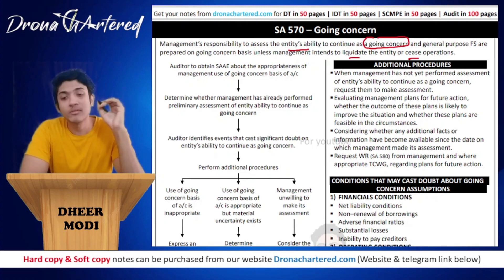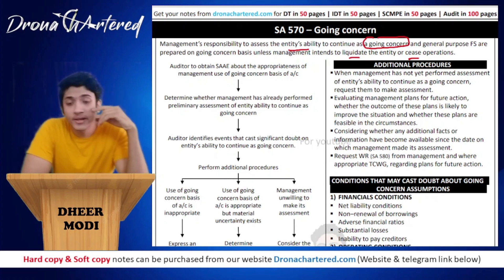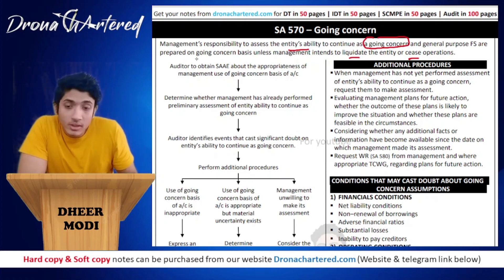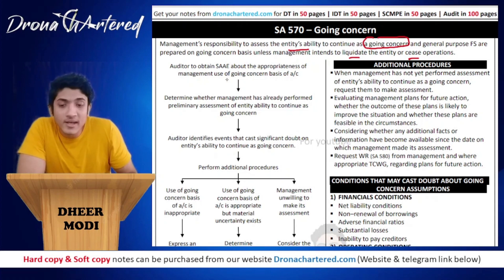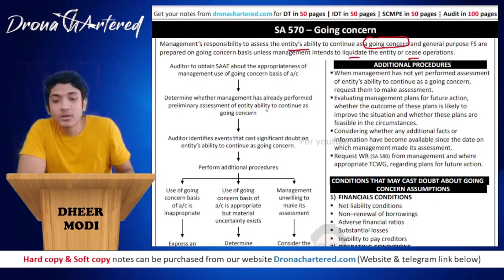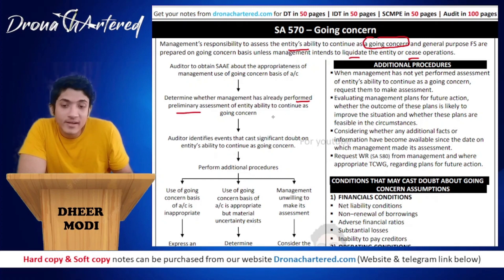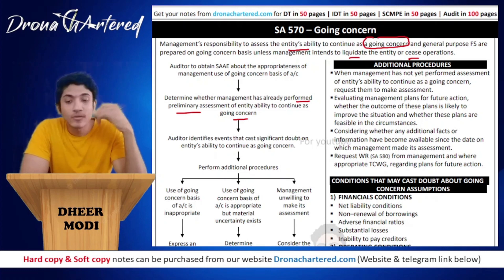Your books of accounts will always be prepared as per going concern basis until and unless the management feels they are going to liquidate the entity or cease operations. The auditor has to obtain sufficient and appropriate evidence about the appropriateness of management's use of the going concern basis of accounting. The auditor will determine whether management has performed the preliminary assessment of the entity's ability to continue as a going concern basis or not.